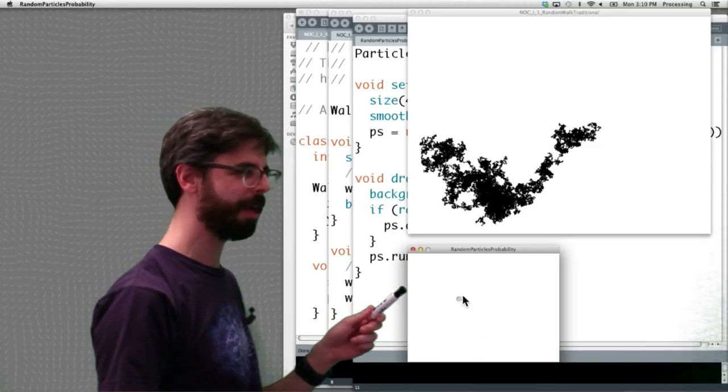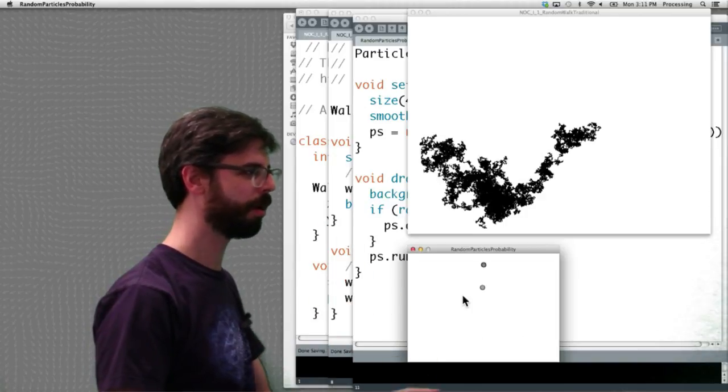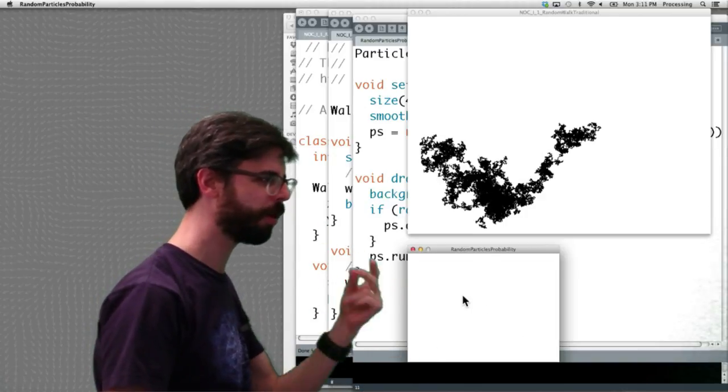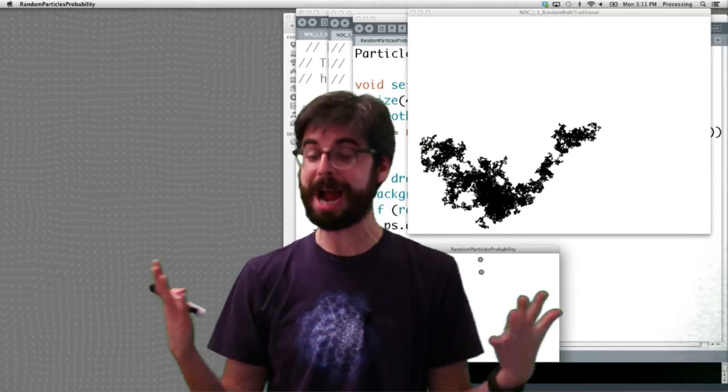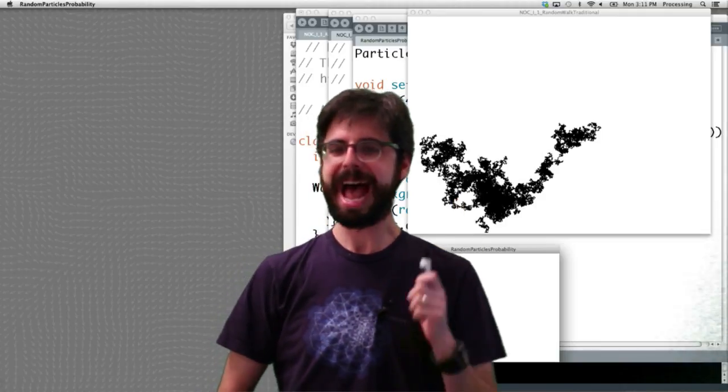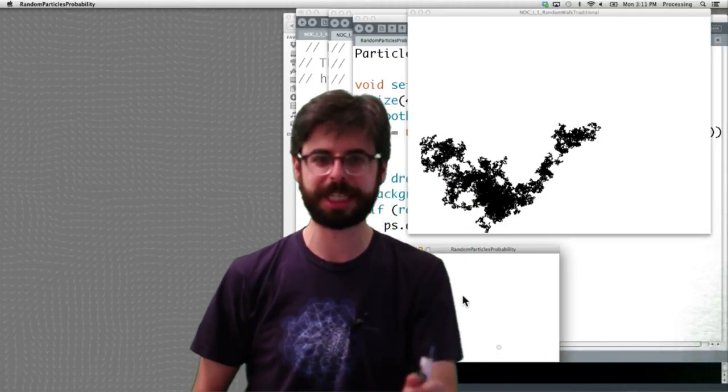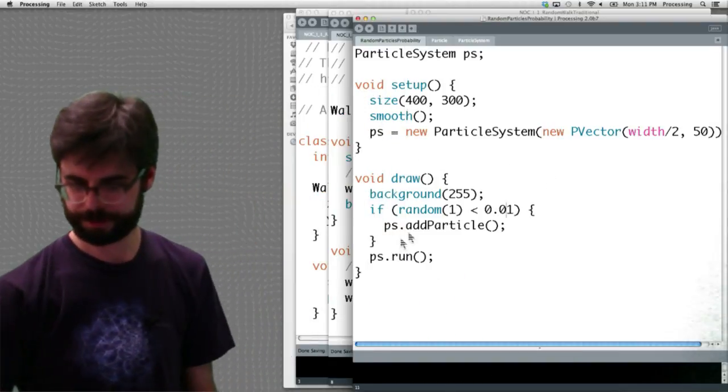Notice how often it's making a particle. Definitely not every frame, and certainly not with regularity. We can't say particle, particle, particle. No, it's making a particle every frame with, I would guess actually, because I just put it in the example, a 1% chance. How do we have something in processing happen with just 1% of the time?